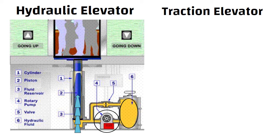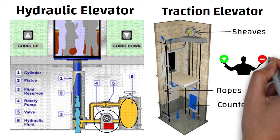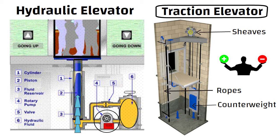On the other hand, traction lifts use ropes, sheaves, and counterweight for moving up and down. Both systems have their own set of pros and cons. Traction elevators are the most widely used elevators all over the world.